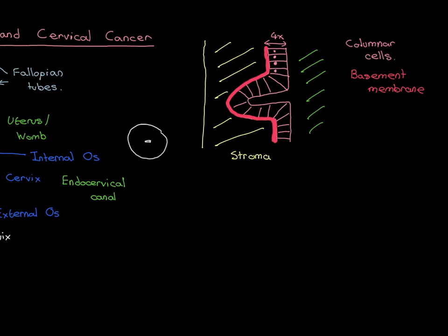On the surface of the columnar epithelial cells there is a mucus layer, secreted by the columnar epithelial cells — they package it into vesicles and exocytose those vesicles onto their apical surface. These invaginations are glands — extensions of the surface area to produce more mucus. Underneath the stroma there is a great big muscle layer, which in reality should be much thicker than I've drawn; it's smooth muscle, not skeletal muscle.